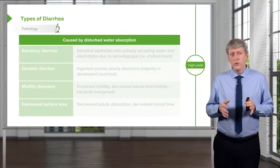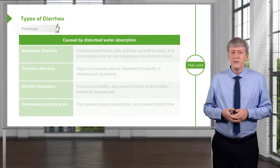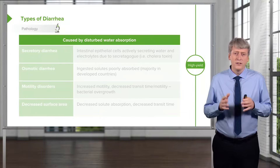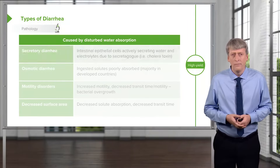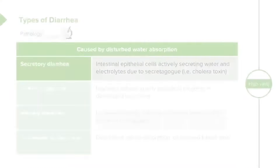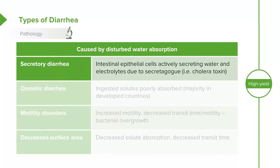Let's go through types of diarrhea, because this is important to understand and can sometimes show up on exams as well. Secretory diarrhea is when intestinal epithelial cells are actively secreting water into the intraintestinal compartment, and electrolytes are going along with it, through osmotic forces causing water loss out into the stools.